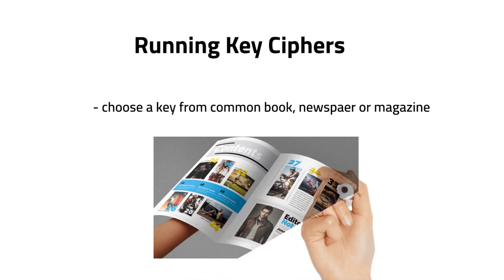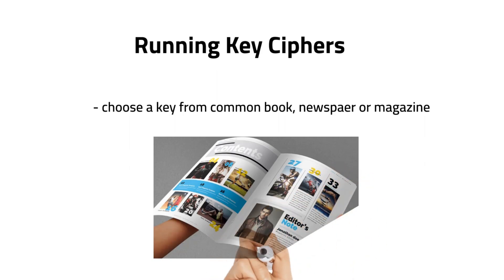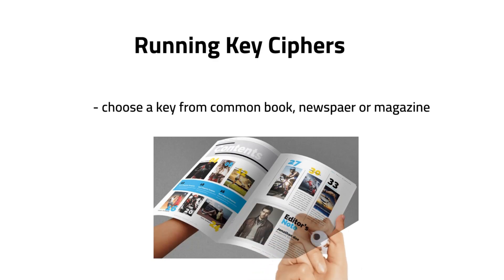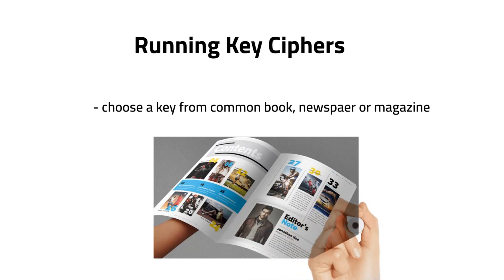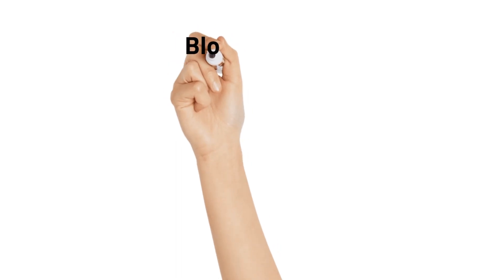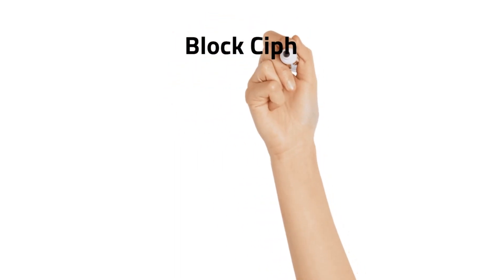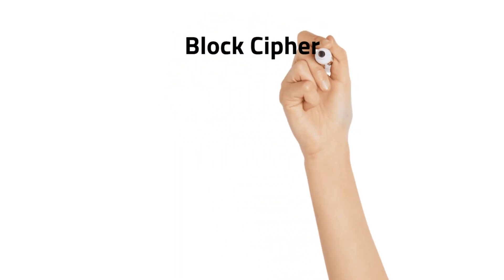For example, the sender and recipient might agree in advance which book they are going to use and which paragraph they are going to choose. They would both simply use as many consecutive characters as necessary to perform the encryption and decryption process.